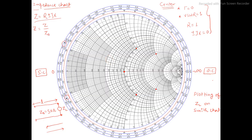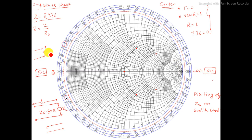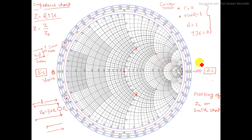Now I will discuss the short circuit point and open circuit point on the impedance chart. This point is 0 and this side is infinity. When we have a circuit that is open, it means we have infinite impedance — V is maximum and I is minimum. If the circuit is short, the impedance will be 0, V will be minimum and I will be maximum. So the point 0 is treated as a short circuit, and infinity is the open circuit where V is maximum.